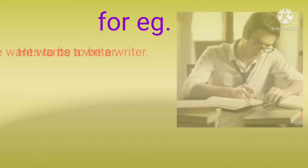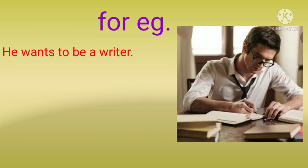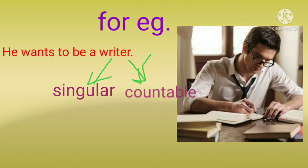For example: 'He wants to be a writer.' अब यहाँ देखिए — writer is a singular noun and also countable. Writer को हम count भी कर सकते हैं — writers होता, plural मिलते हैं. But here, countable noun means one writer. He wants to be a writer — so writer is countable and singular, तो we will use the article 'a' here.